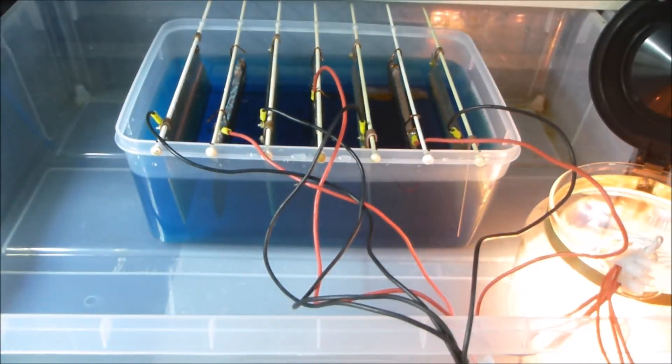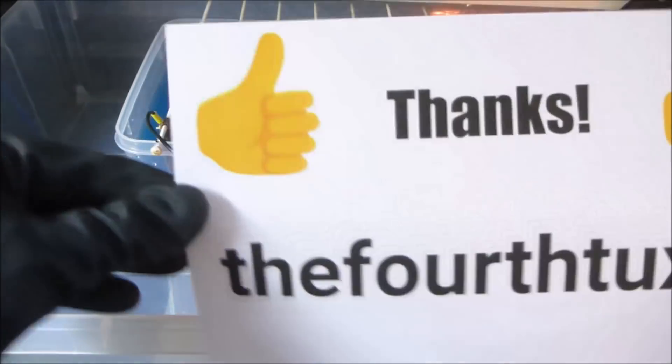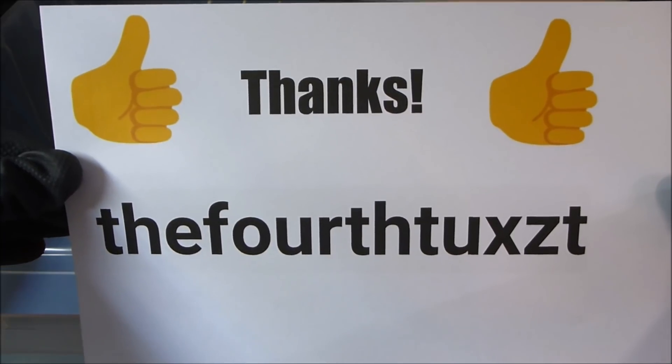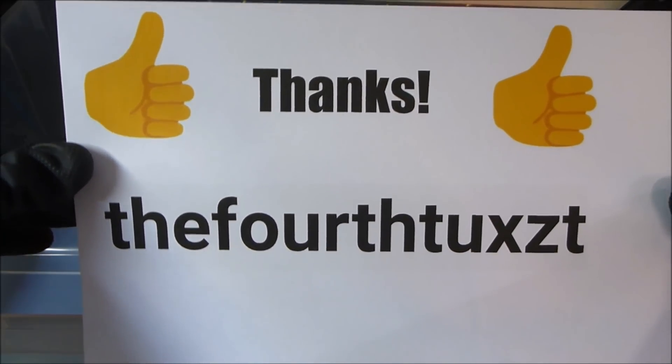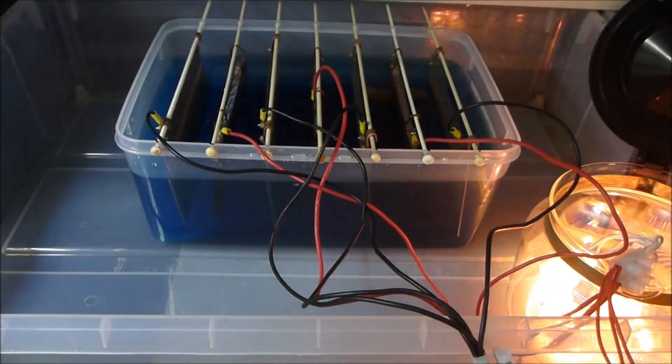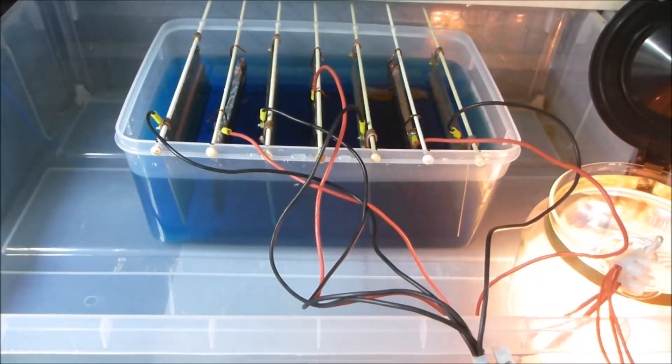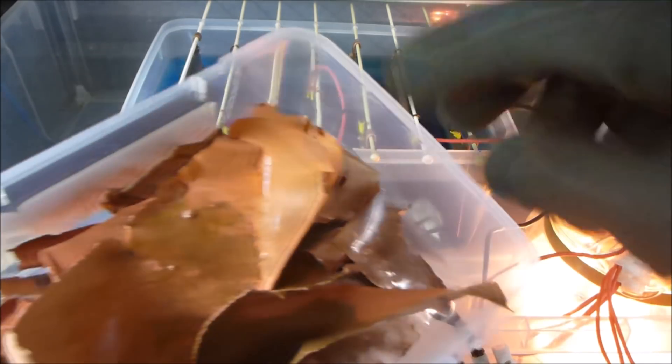So yeah, that's turned out really well. I just want to take a bit of an opportunity to say a big thank you to user TUXZT. He's the one that suggested that you could use a blade to loosen the copper sheet from the stainless steel and then just peel it off. I would have never even thought for a minute that that would be possible to get kind of nice clean copper sheets like this.